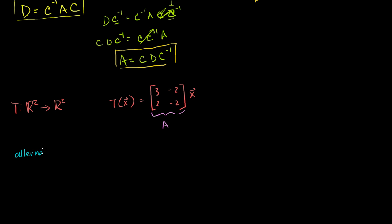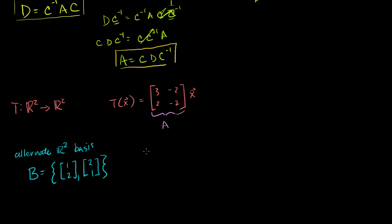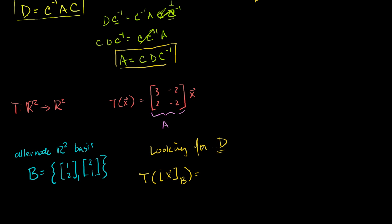Now let's say we have an alternate R2 basis — we'll call it B. This alternate R2 basis has the vectors (1, 2) and (2, 1). Given this alternate basis, we want to find the transformation matrix in that coordinate world. We're looking for some matrix D such that if I apply the transformation to x in B coordinates, it equals D times x in B coordinates.